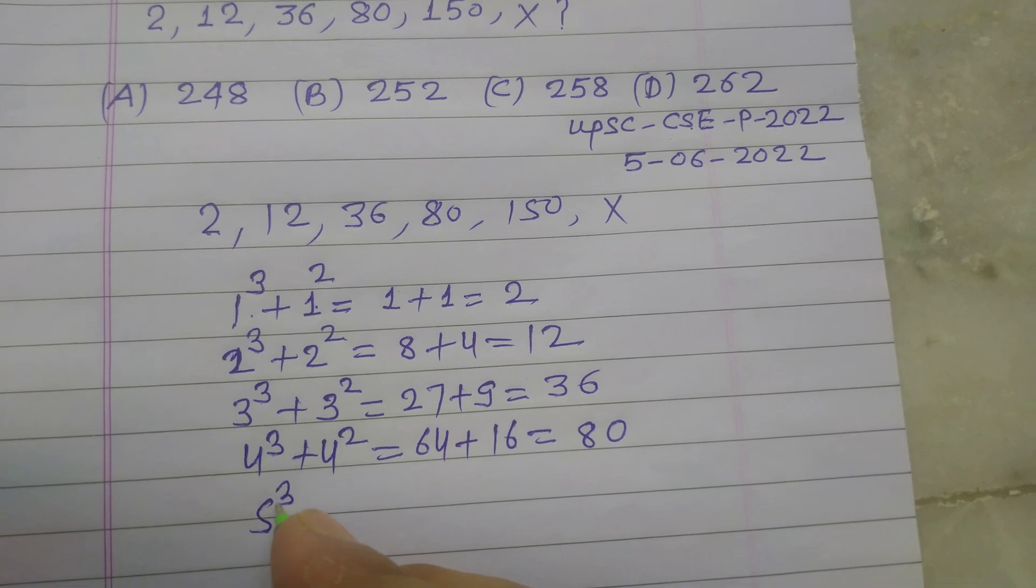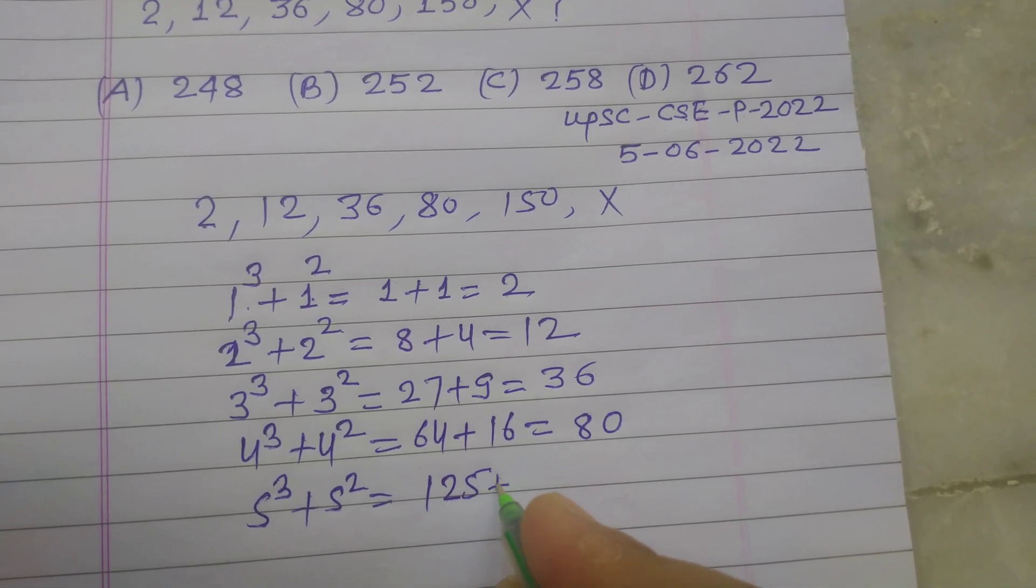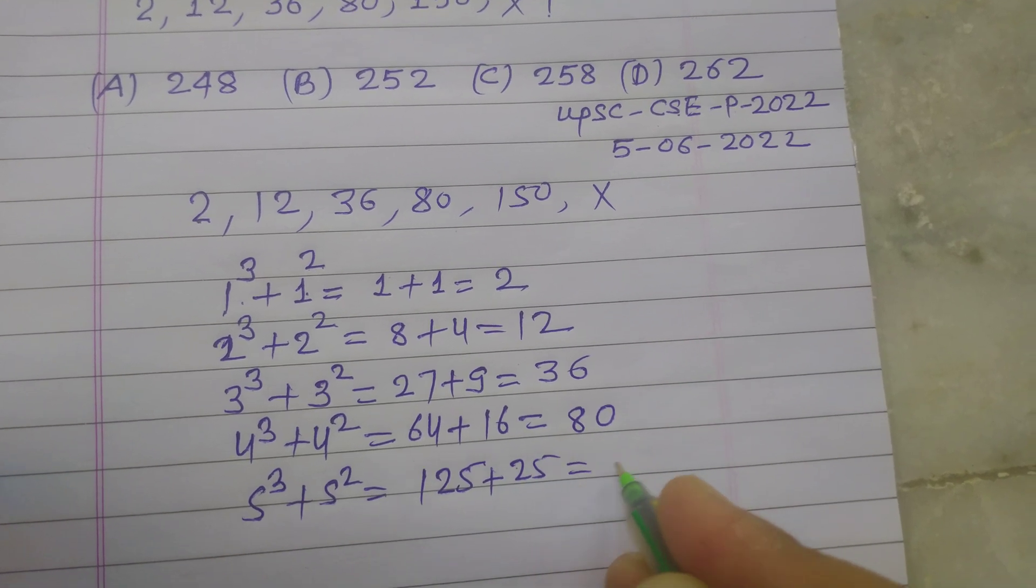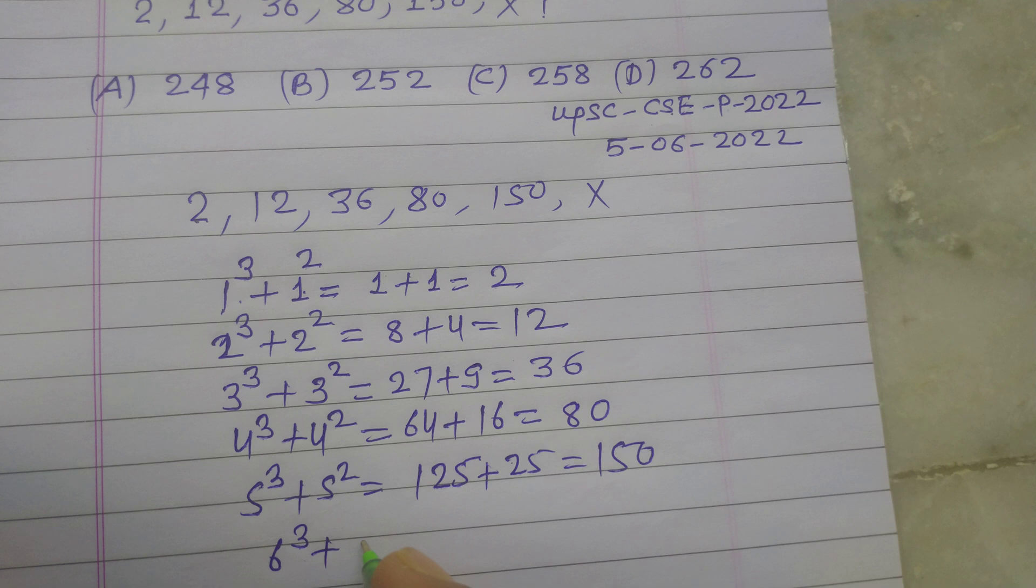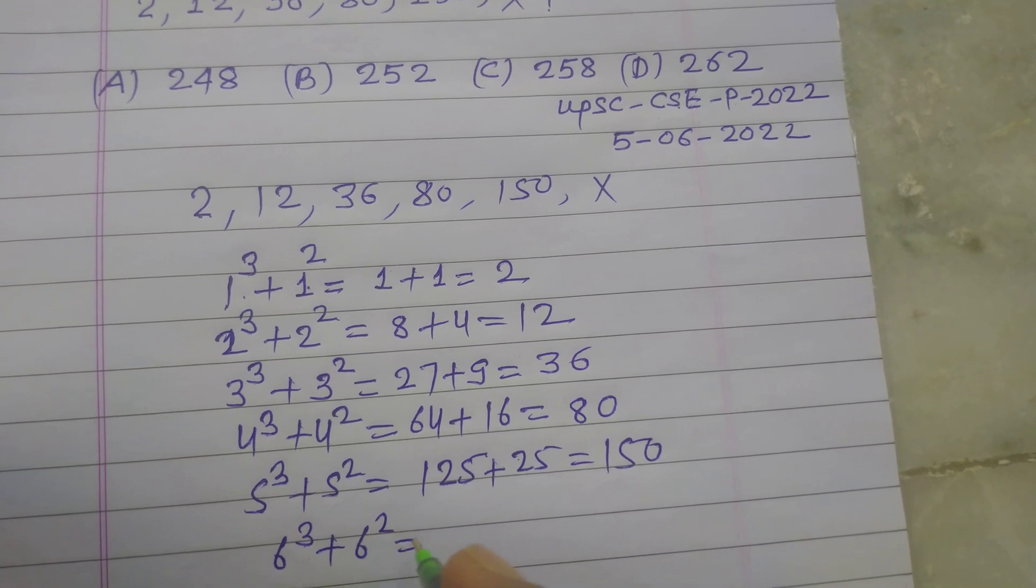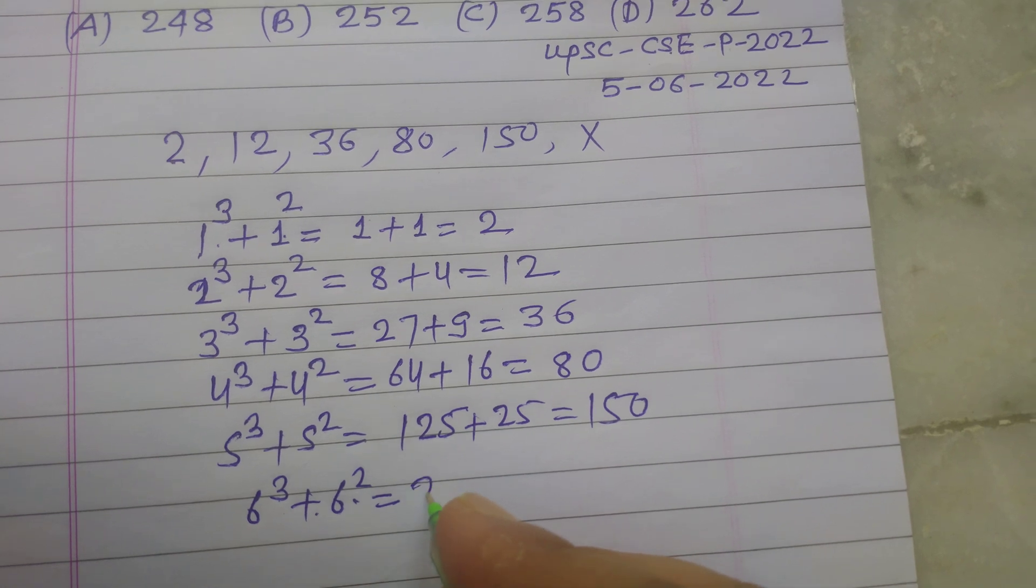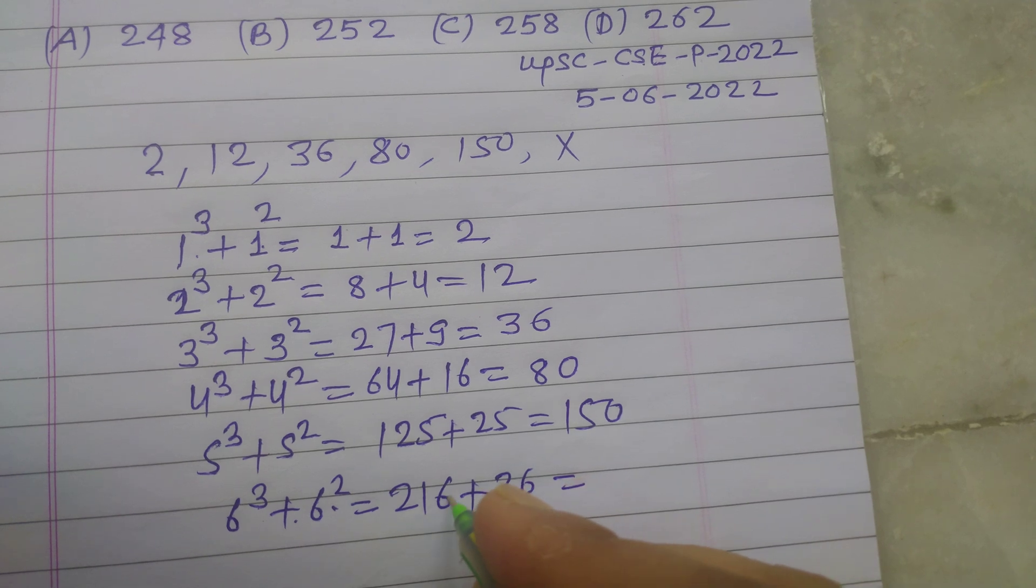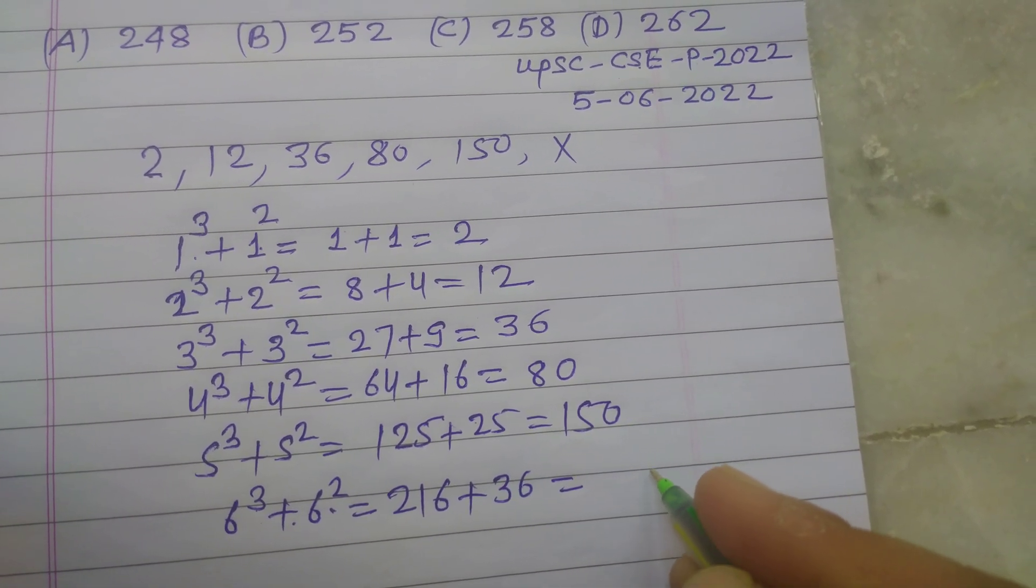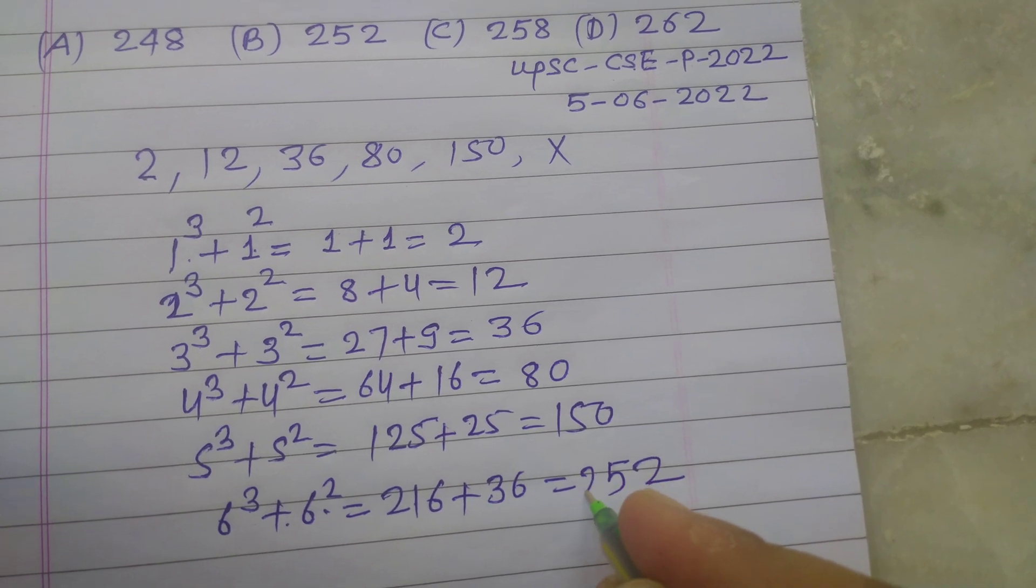Now 5 cube plus 5 square, 5 cube is 125 plus 5 square 25. So this is 150 and 6 cube plus 6 square, 6 cube is 216 and 6 square is 36. So we got 6, 6, 12 and 3, 1, 4, 1 carry 5 and this is 2,